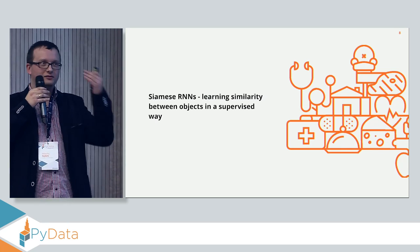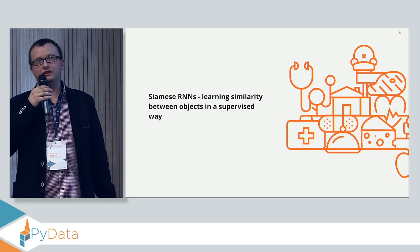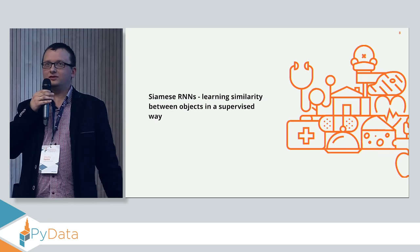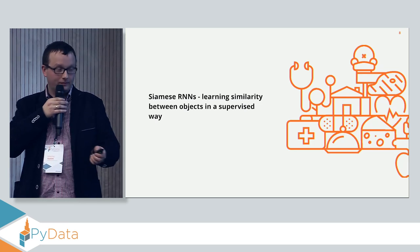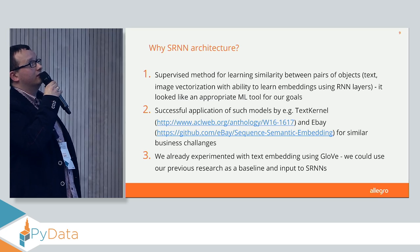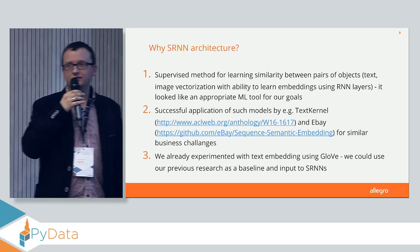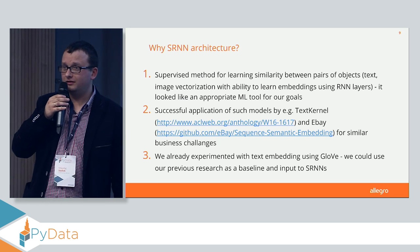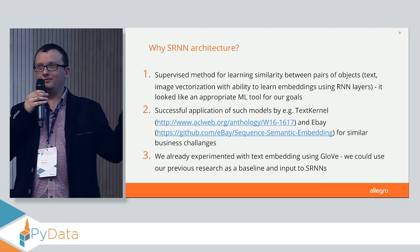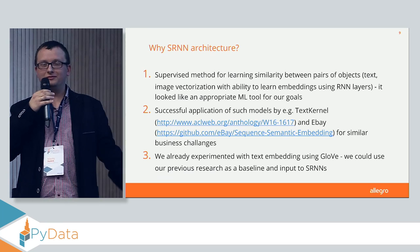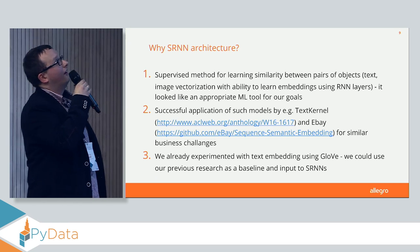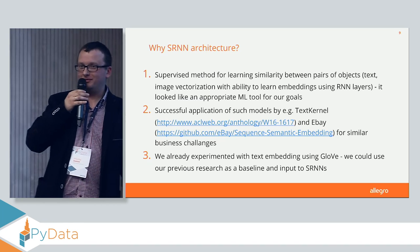The idea is to build a supervised model that learns that some objects are similar — essentially the same — and some objects should be very distant. This is a supervised method for learning similarity between pairs. You can use text turned into vectors fed into the model, or you can use images run through ImageNet networks and then seek similarity between objects. It seemed like an appropriate method for our task.